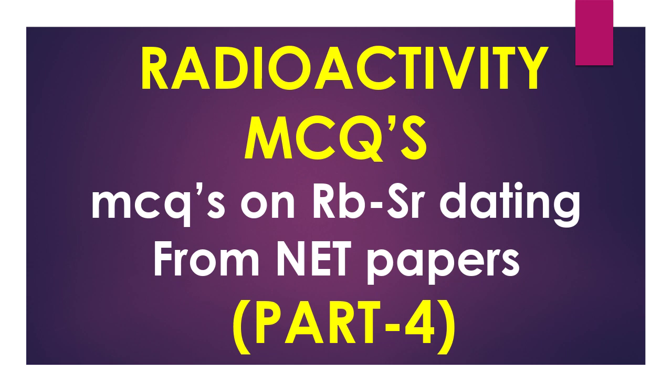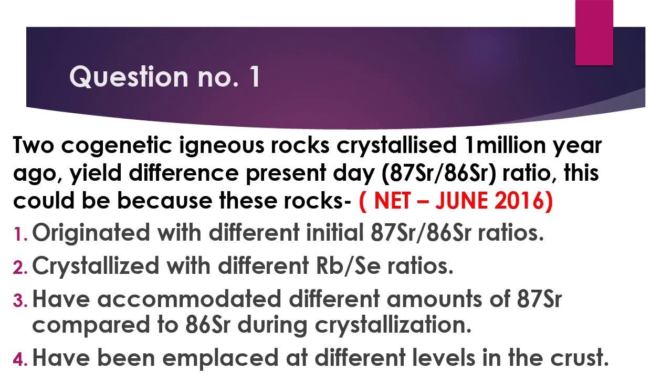First question is: two cogenetic igneous rocks crystallized one million years ago yield different present day 87Sr to 86Sr ratios. This ratio difference could be because of which of the following conditions? To solve this question, you need a general idea of the dating equation and the graph which is formed by the dating equation.